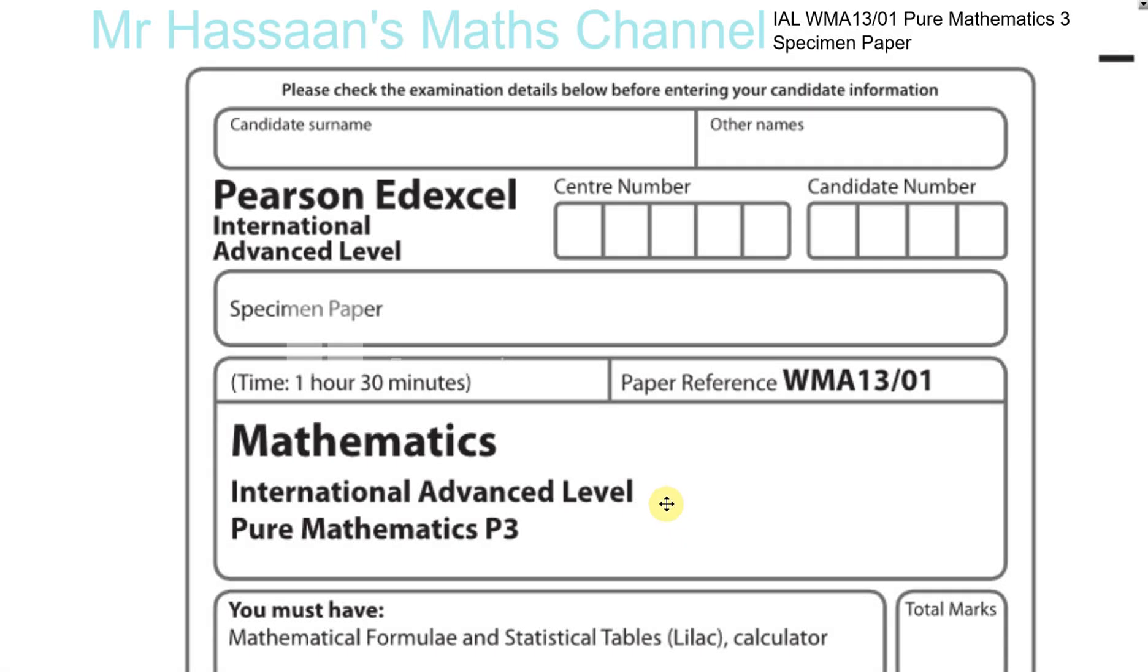Now for the specimen paper for the new P3, Pure Mathematics 3 International A Level. Up to now there have been no actual papers come out. I've gone through the sample assessment paper, and I'm about to go through the specimen paper. We're waiting for the first paper to come out this January, so this is something that's new.